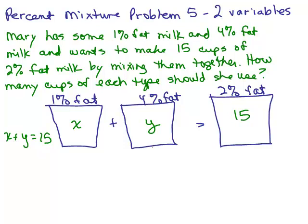Now let's think about the fat in each of these containers. It's kind of gross to think about it but this is reality. 1% fat, I'm going to write this as a decimal, that would be .01, 4% as a decimal is .04, and 2% as a decimal is .02. It's usually easier to write percents in decimals when you're doing these types of problems instead of fractions.